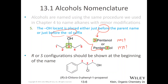The RS configuration should be shown at the beginning of the name. For example, you've got a stereo center at the two carbon: two-chloro, three-phenyl, one-two-three — there's my three-phenyl — one-propanol. The longest continuous carbon chain with the principal functional group gives us one-propanol, and the R designation goes at the beginning of the name.